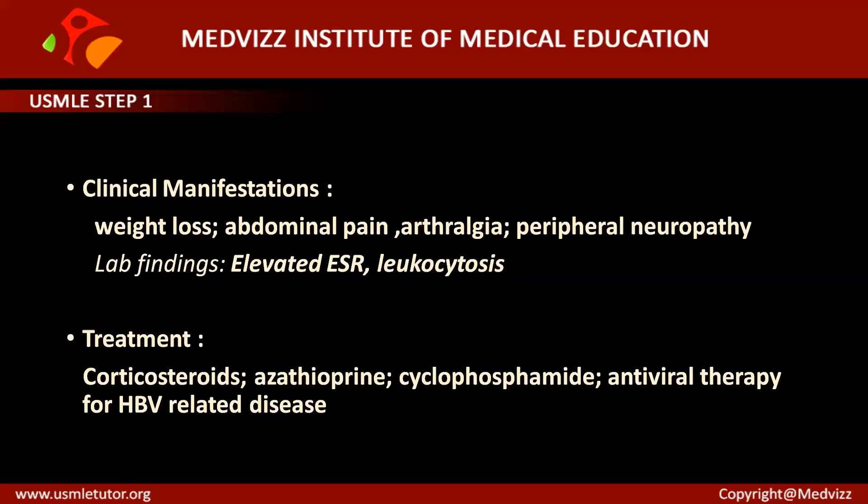To repeat: the triad for Churg-Strauss syndrome is pulmonary vasculature involvement, plus peripheral fluctuating eosinophilia, plus late-onset asthma unresponsive to bronchodilators. When you see this triad, remember it is Churg-Strauss syndrome — a necrotizing vasculitis affecting small and medium-sized vessels. Laboratory findings are also very important: Churg-Strauss reveals positive anti-neutrophil cytoplasmic antibodies (p-ANCA).